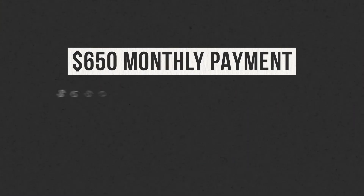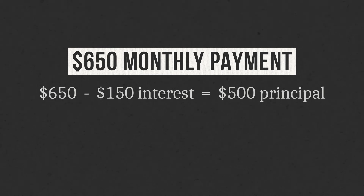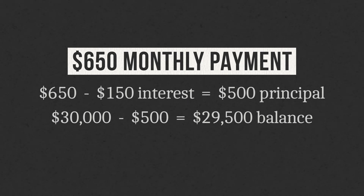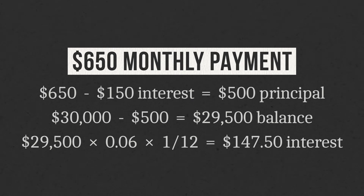But wait — what if my monthly payment was $650? If $150 pays the interest for that month, the remaining $500 would go toward the principal, making the new balance on the loan $29,500. To calculate the interest in the following month, I would take $29,500, multiply it by 6%, then multiply by 1 over 12. The result is just $147.50 in interest. As I work toward paying off that loan, the portion of my monthly payment that goes toward interest decreases over time, and the portion that goes toward the principal increases.